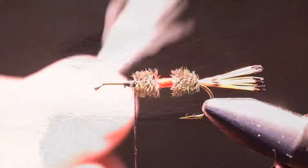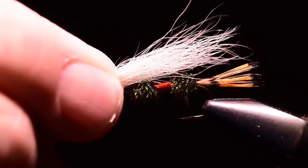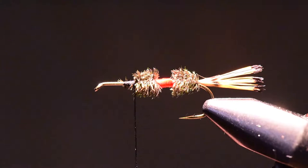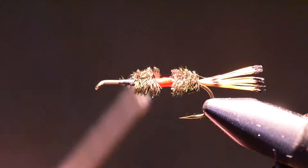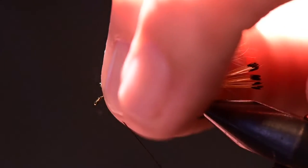This material is somewhat kinky and it doesn't like to stack real well unless you clean it and align the tips. So I'll take the grouping of hair and I'll proportion it along the top of the hook shank and then I'll clip off the excess and tie this in right behind the head position and tie it all the way back to that first body segment.